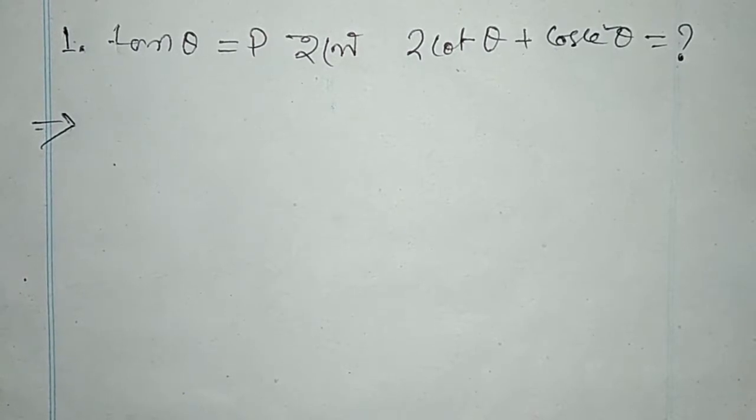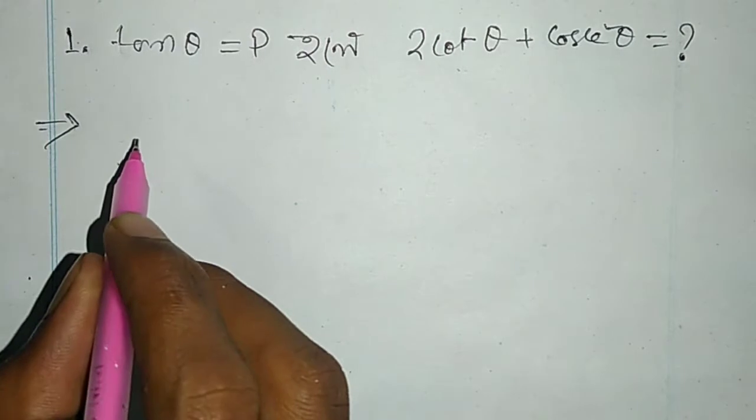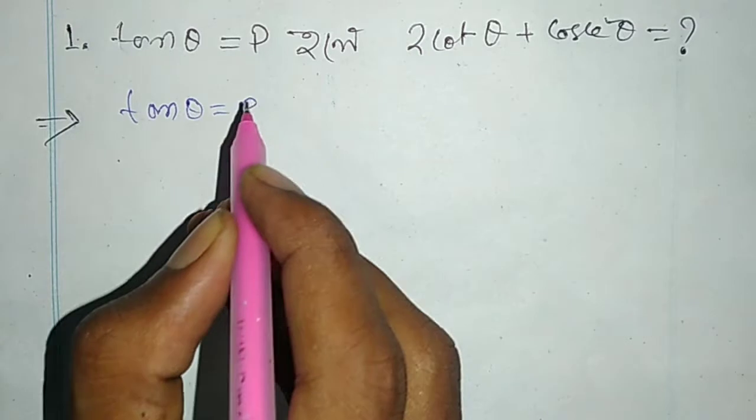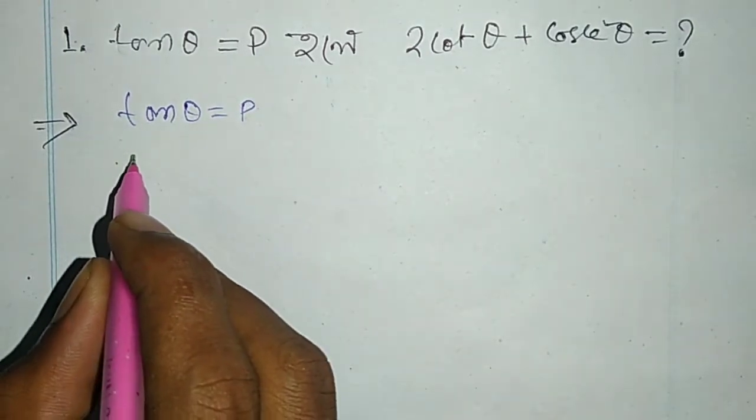tan θ equals p. Find 2(cot θ + cosec θ). So then tan θ equal to p to cot θ.